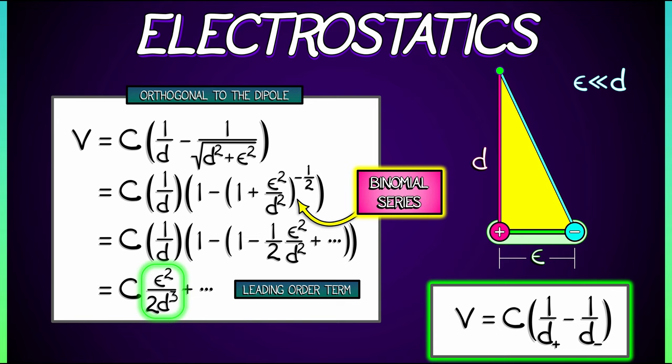That leading order term in the potential up to this constant C is epsilon squared over 2D cubed. And this is really cool because this tells you how that potential changes. If you change epsilon a little bit, or if you change D a little bit, you could see that you're changing the potential by the square of epsilon and the cube of D. That's kind of cool. Not obvious from the formula. The expansion really told us a lot there.